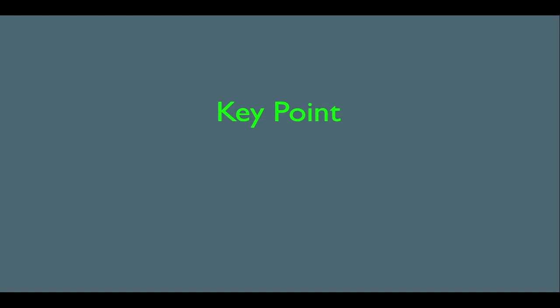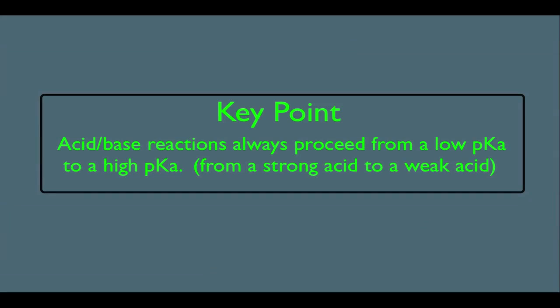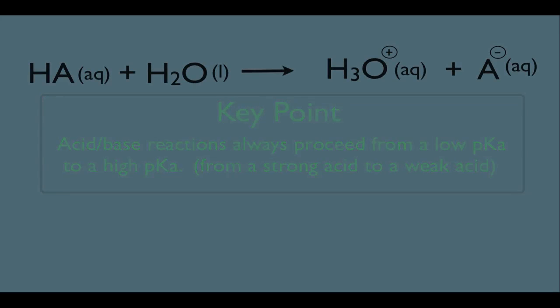In this online lecture, we're going to talk about how to predict the direction of acid-base reactions. Our key point is that acid-base reactions always proceed from a low pKa to a high pKa. In other words, they always go from a strong acid to a weak acid. This is an extremely important skill in organic chemistry.